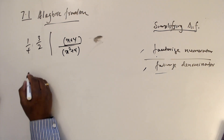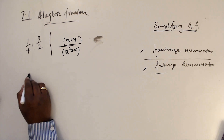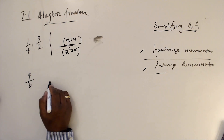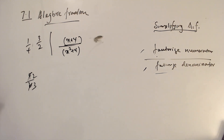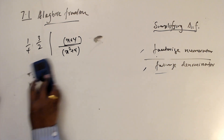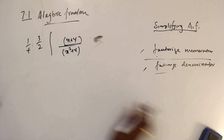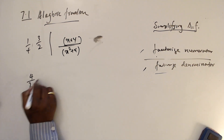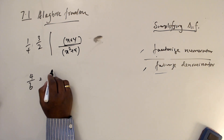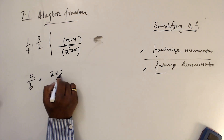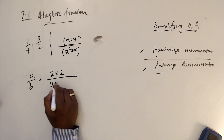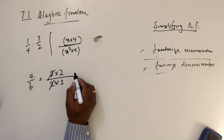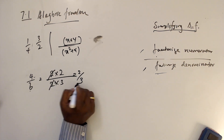How do you factorize it? For example, simplify 4 over 6. You can cancel the common factor 2, giving 2 over 3. That is, write 4 as 2 times 2 — that's the factorization — and write 6 as 2 times 3. Then cancel the common factor 2, leaving 2 over 3.